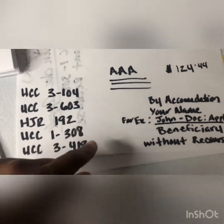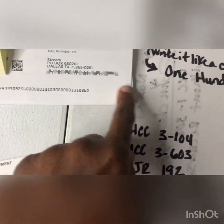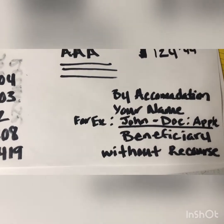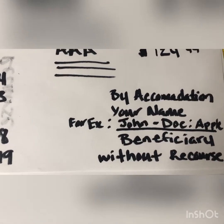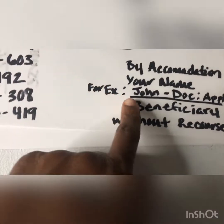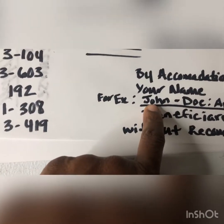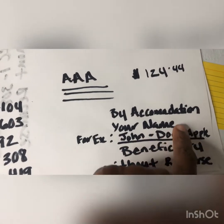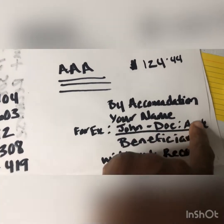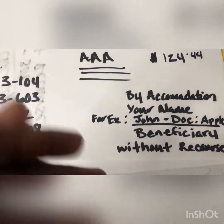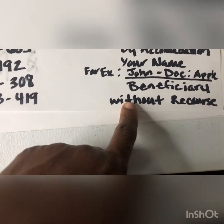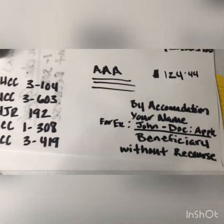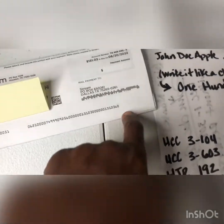Then you want to make sure that you write down here in this corner somewhere. You want to write this information about the accommodation — your name. You want to write out your name, so you put John Doe, semicolon, your last name — your whole name. And then you want to put 'beneficiary without recourse.'